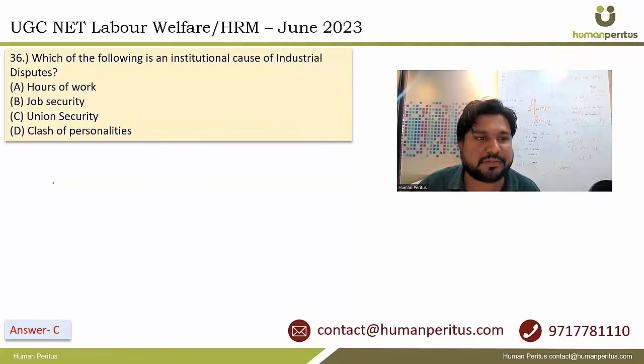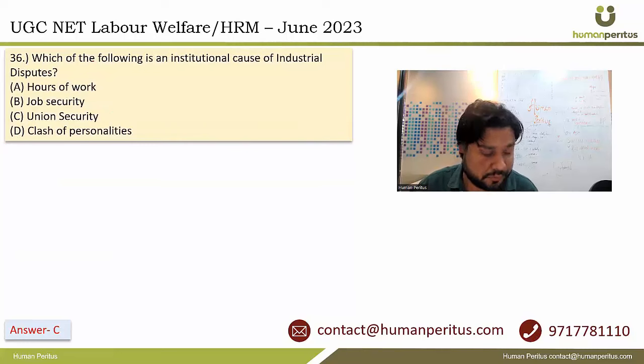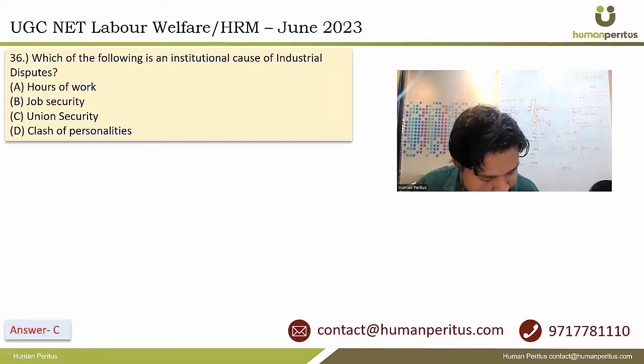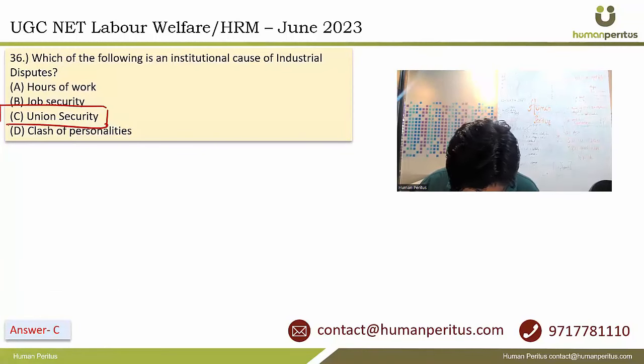Which of the following is an institutional cause of industrial dispute? The most appropriate answer is option C, which is union security.